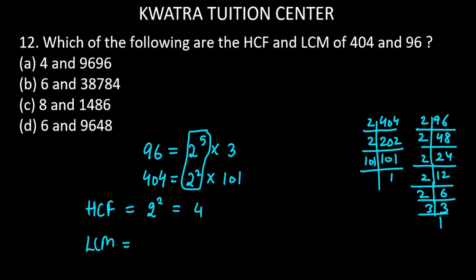Now we take LCM. We consider LCM, we all consider the terms. And in the common factor, what do you have to do? Highest power. So it will be 2 to the power of 5 into 3 into 101. So 2 to the power of 5 is how much? It is 32. And 32 into 3 will be 96, and 96 into 101, so you will have 9696.